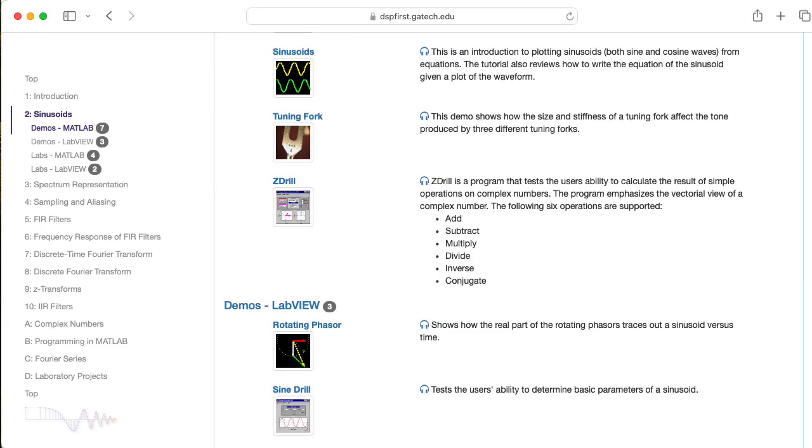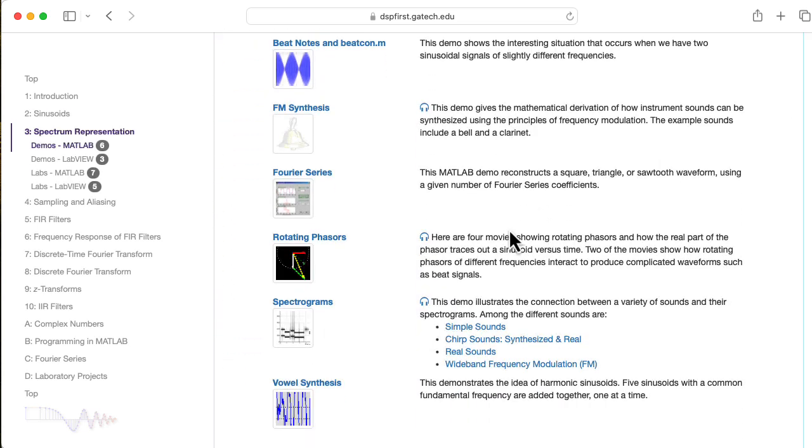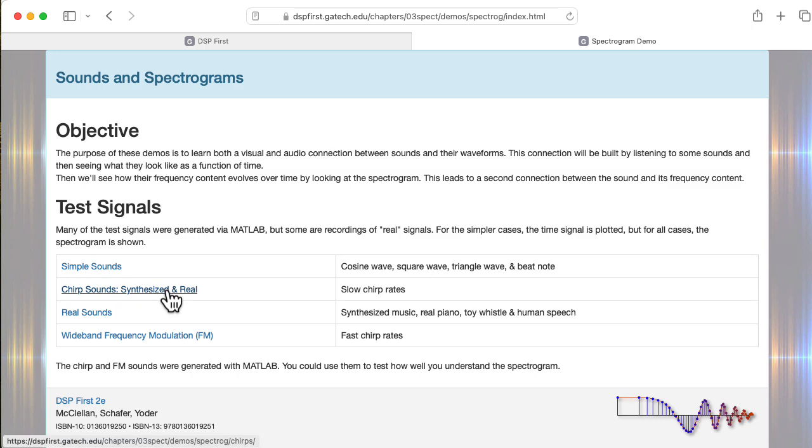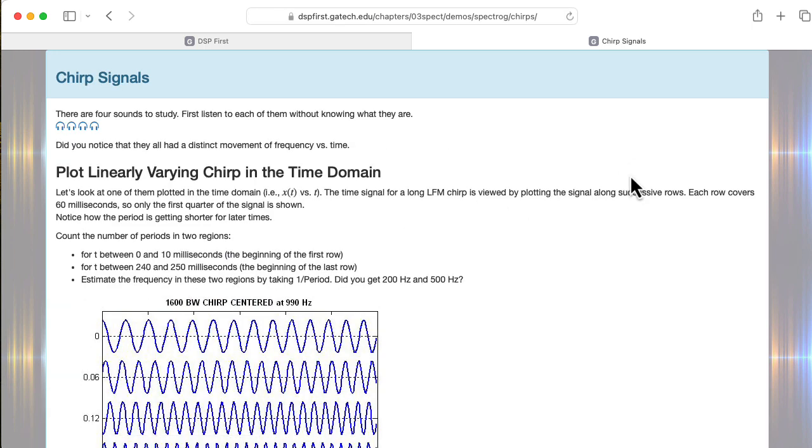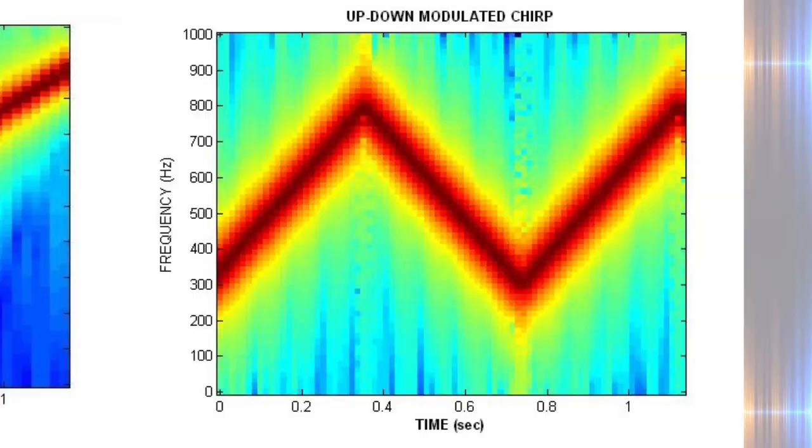Let's look at the DSP first website. Scroll down to chapter three and take a look at these example spectrograms. In particular, let's look at some chirp sounds. Okay, you've heard this kind of thing before already. Let's look at this up down modulated chirp.